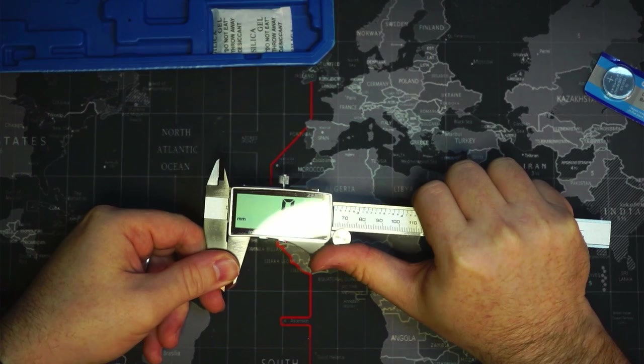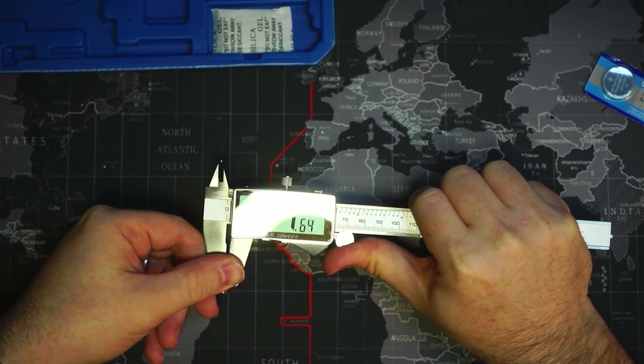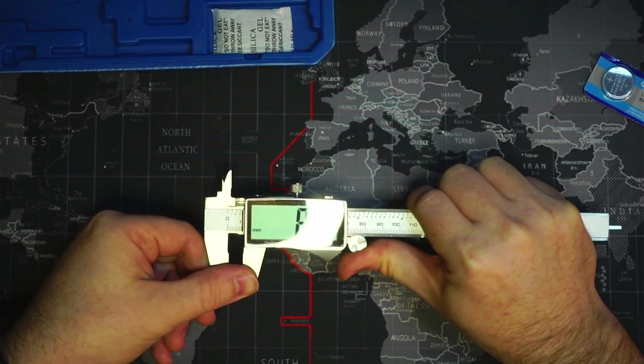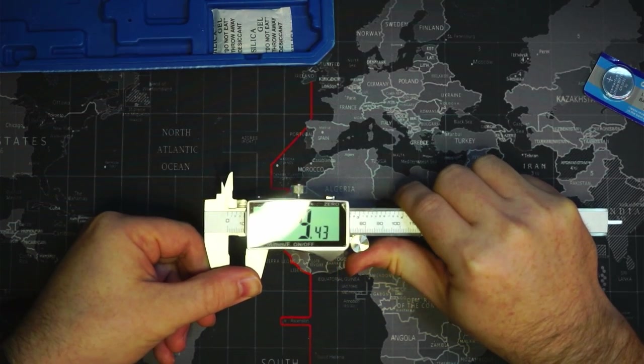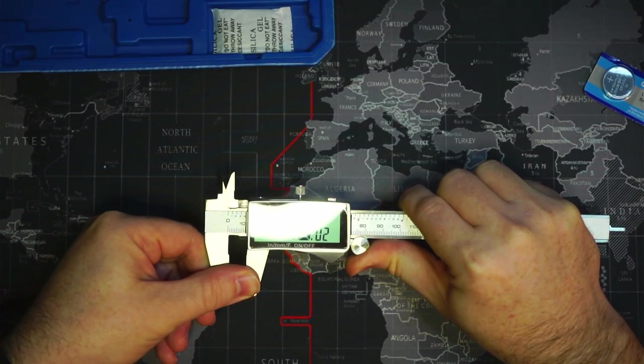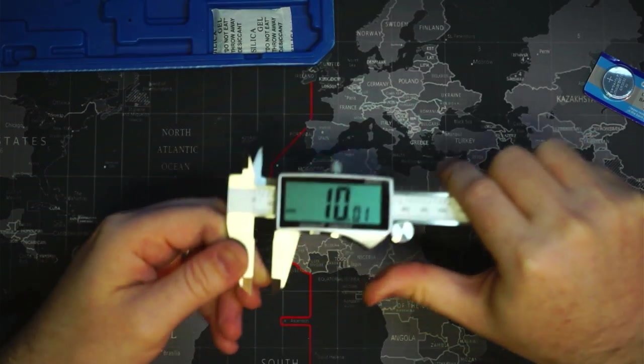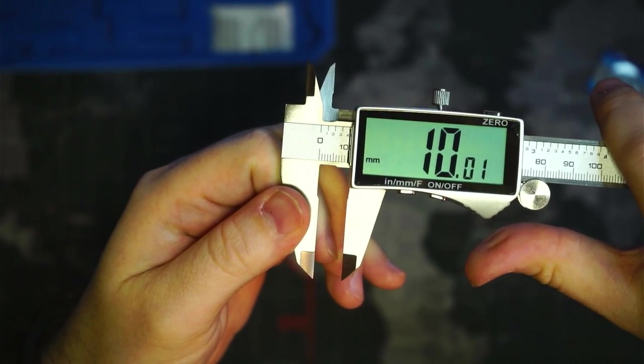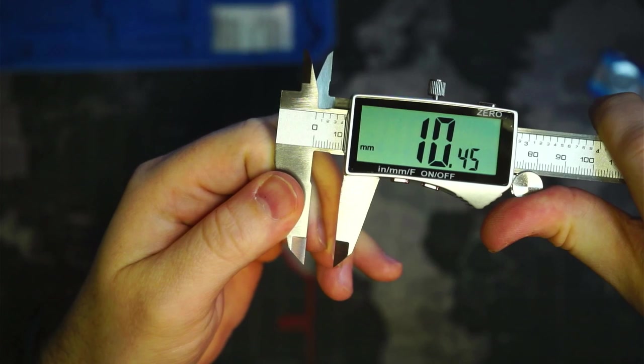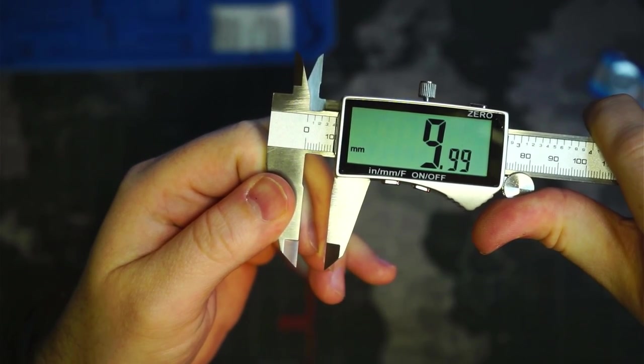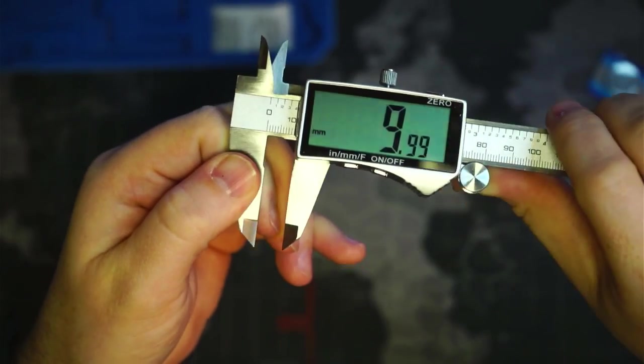Let's move it out to 10 millimeters and we'll see if the edge of the block is accurate. So it is pretty accurate there on the ruler that it comes with. The line for the 10 millimeters does line up quite well with the millimeters measured on the screen.